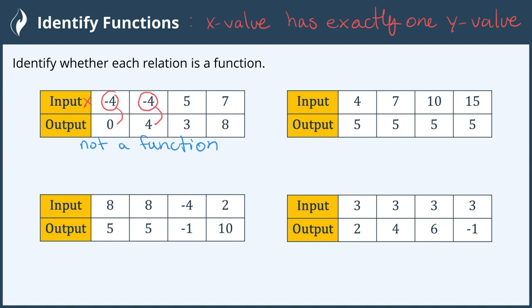Let's look at the second table. The x value of 4 has a y value of 5, the x value of 7 has a y value of 5, the x value of 10 has a y value of 5, and the x value of 15 has a y value of 5. Each of these x values has exactly one y value.